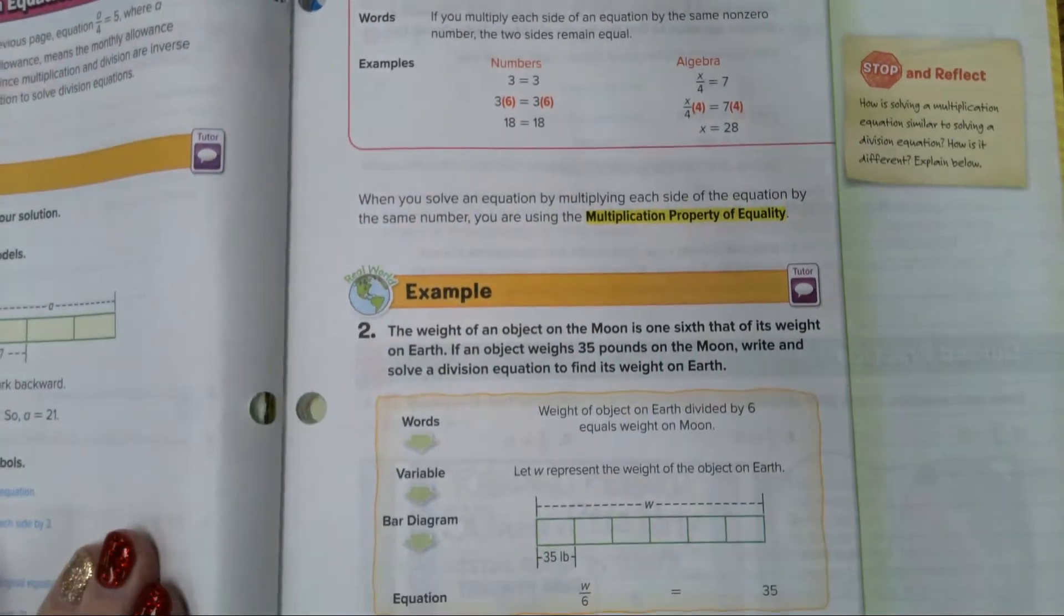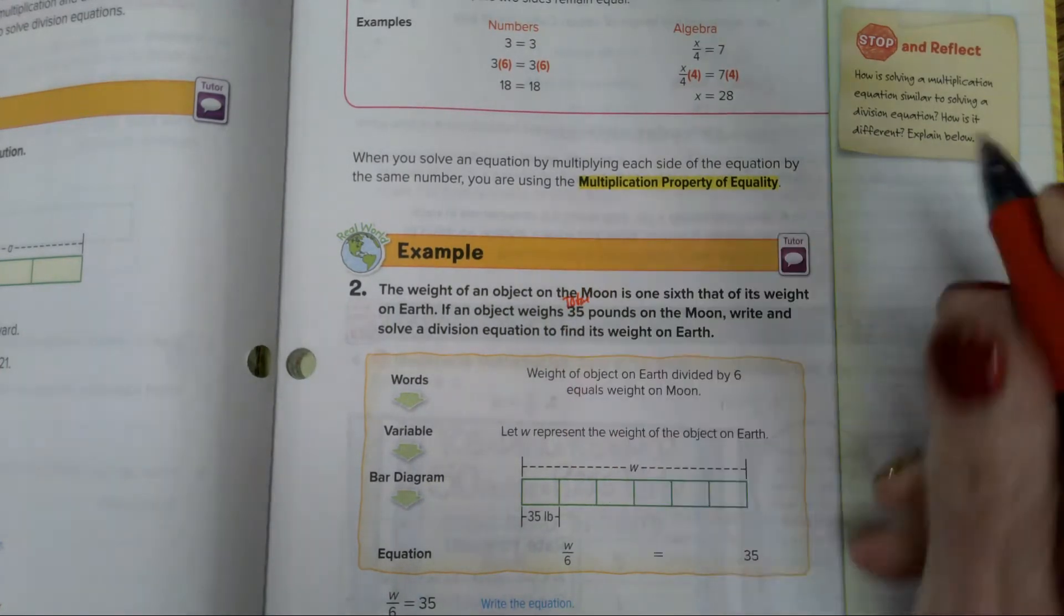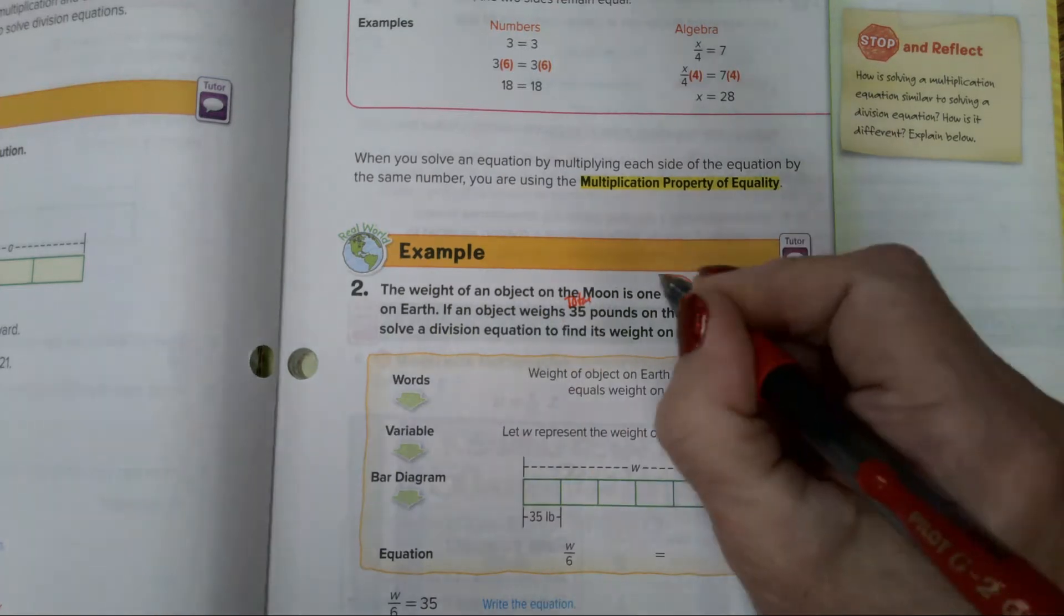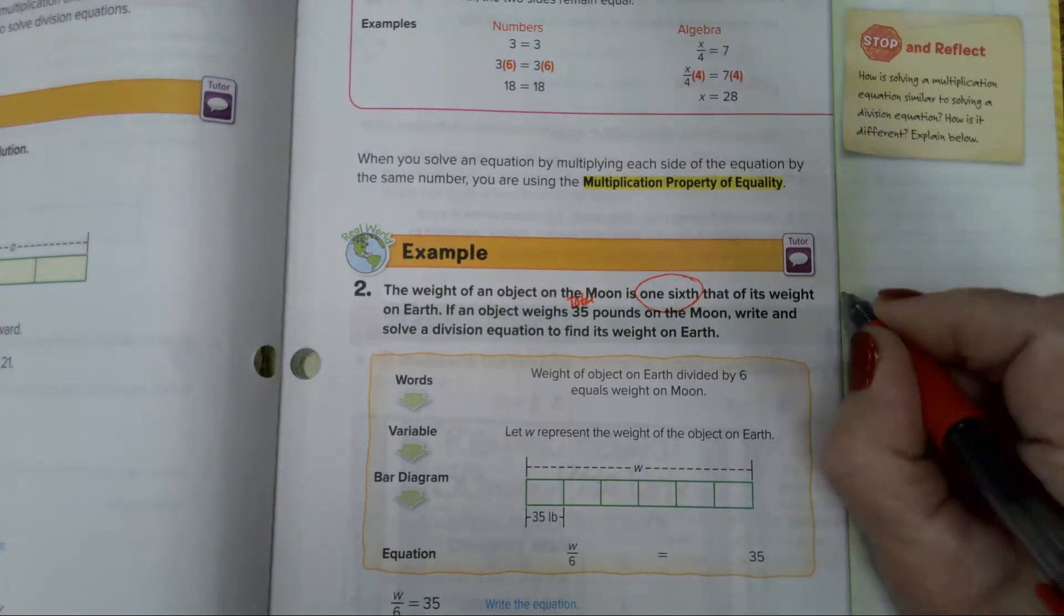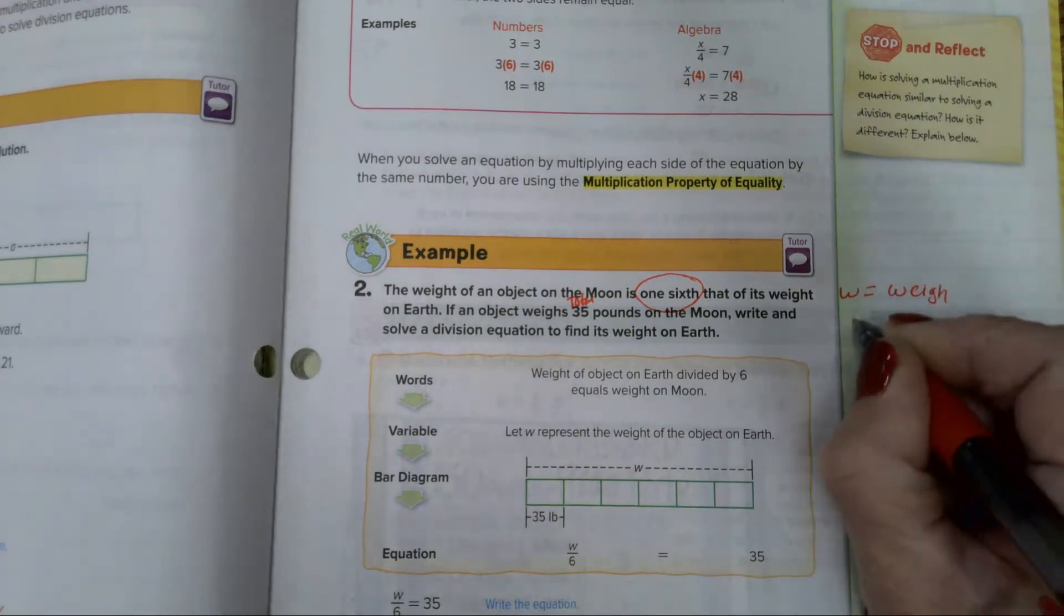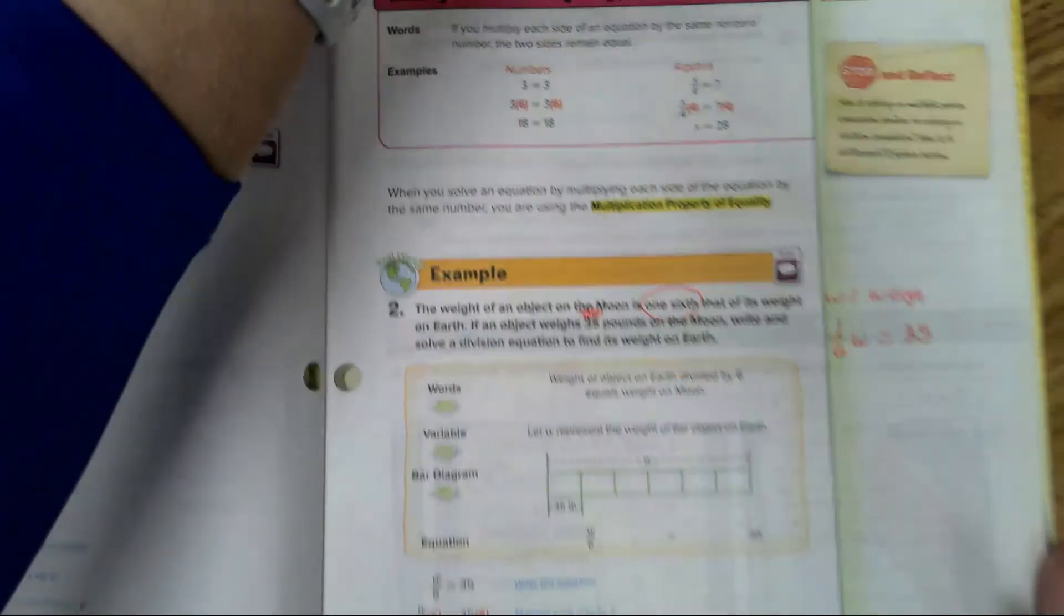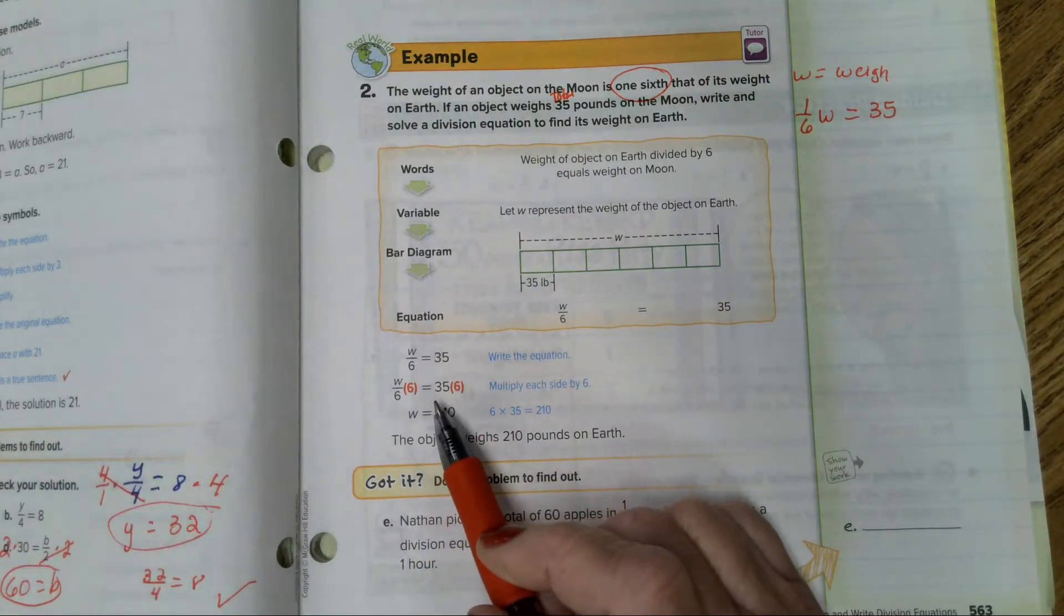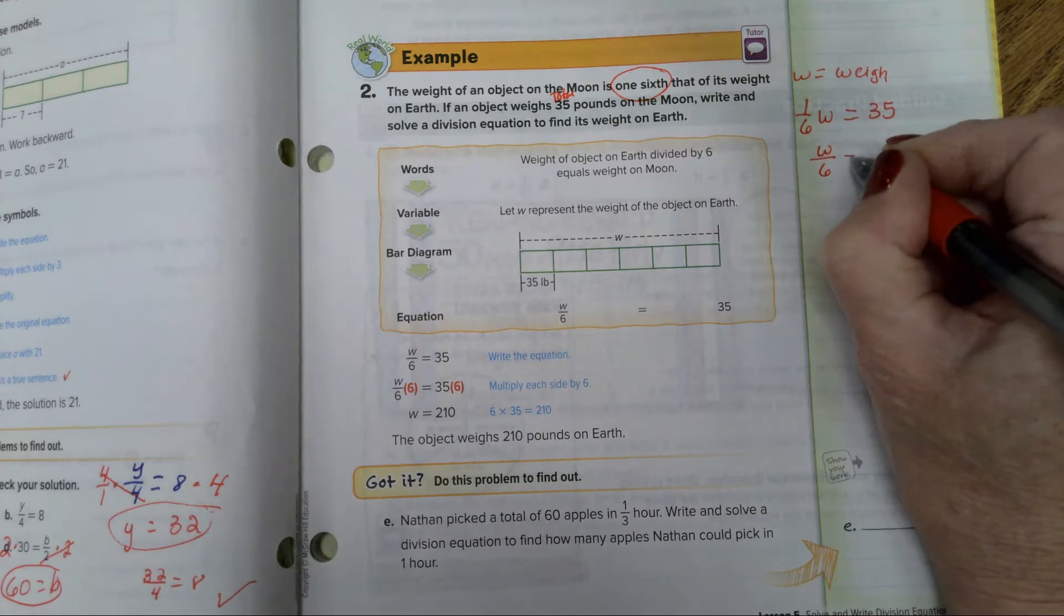Now let's attempt a word problem. Example 2. The weight of an object on the moon is 1/6 that of its weight on Earth. If an object weighs 35 pounds on the moon, that's going to be our total, write and solve a division equation to find its weight on Earth. So, 1/6 times W equals 35. I'm going to define my variable. They defined it as W equals weight. In the book, as you look on down here, they've written it a little differently. They put W over 6. Why would they do that? Well, 1/6 times W can also be written as W over 6 equals 35.